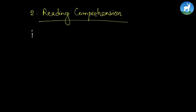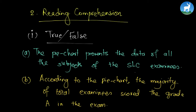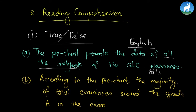Now let us go to question number two, that is reading comprehension. Question one: study the table and pie chart and indicate whether the following statements are true or false. The first statement is: 'The pie chart presents the data of all the subjects of the SLC examinees.' This is false, because it does not represent all subjects — it only represents the English language subject.